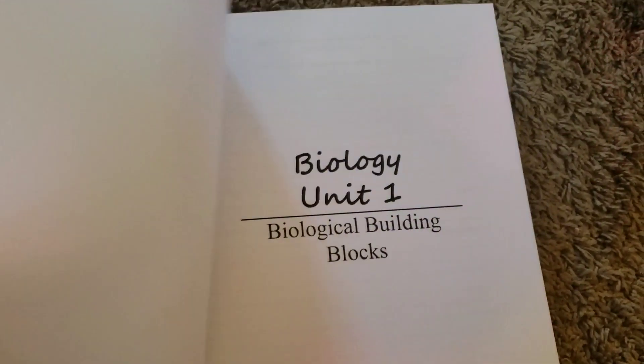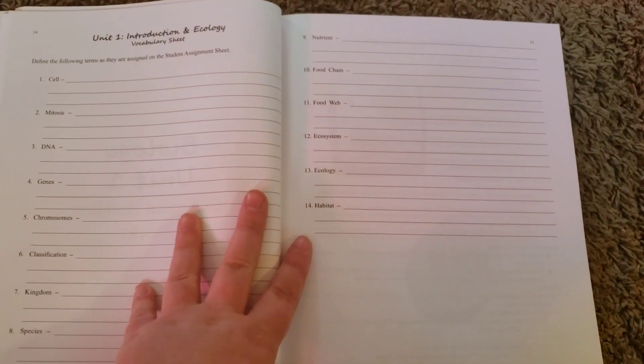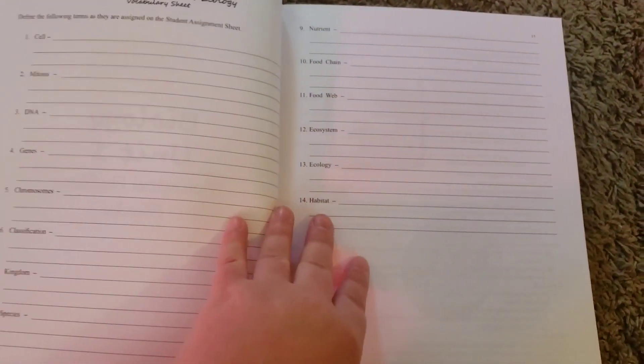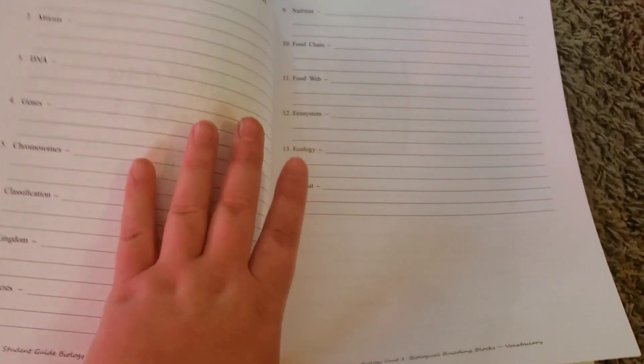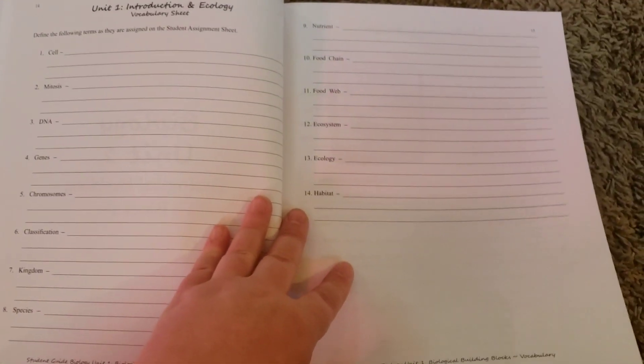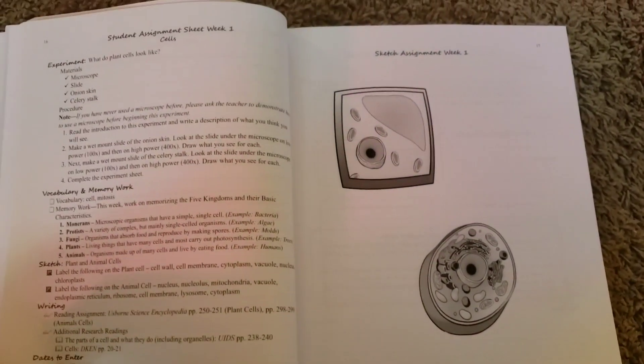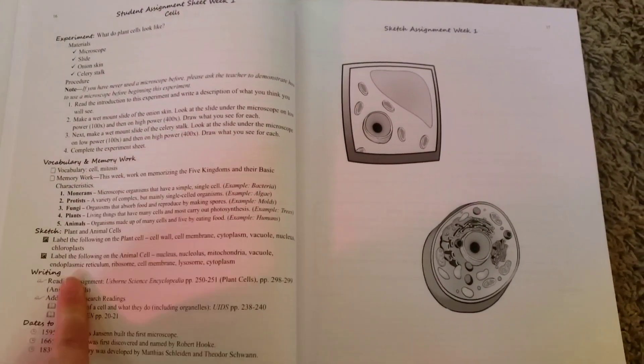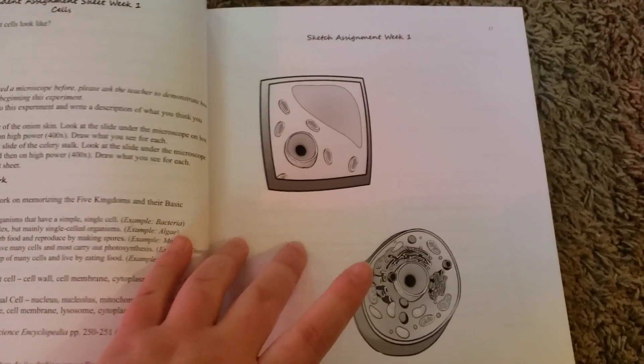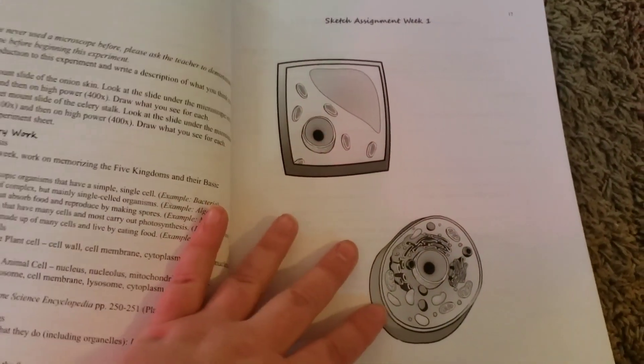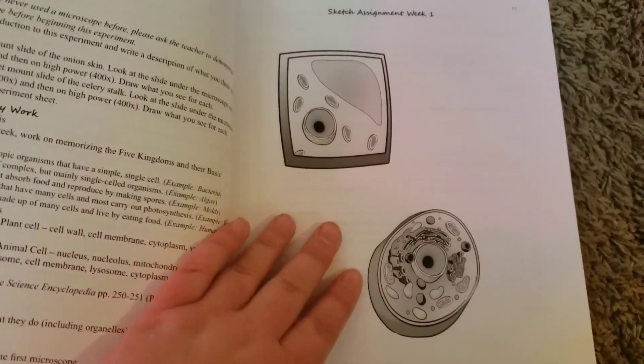I'm going to go ahead and flip through and get to the actual assignments. But here for unit one is where they'll do the vocabulary. And I love that this is in here, so I don't have to have a separate notebook or anything. He can just take the student workbook and copy down his vocab words. Here is the student assignment sheet, just like in the teacher guide. Here is the sketch assignment. So he'll basically just be coloring that in, or he can sketch it down on a separate sheet of paper or something if he wants to.